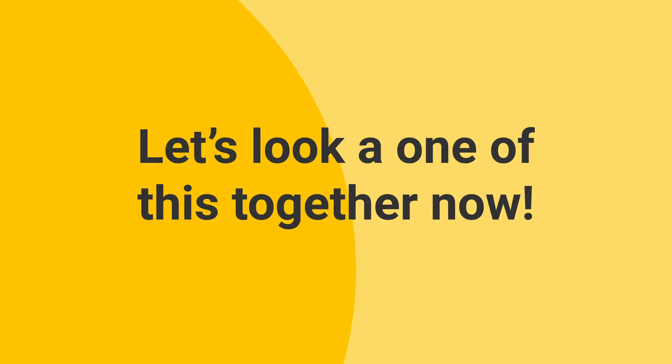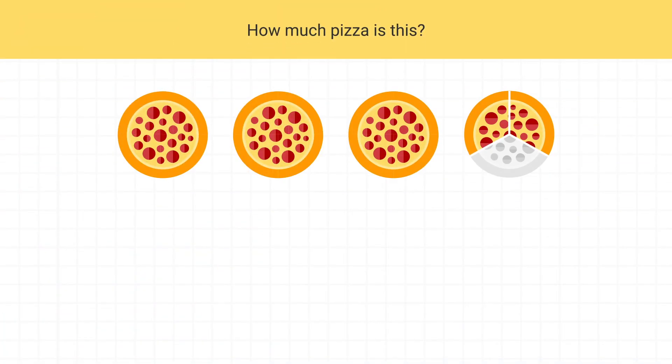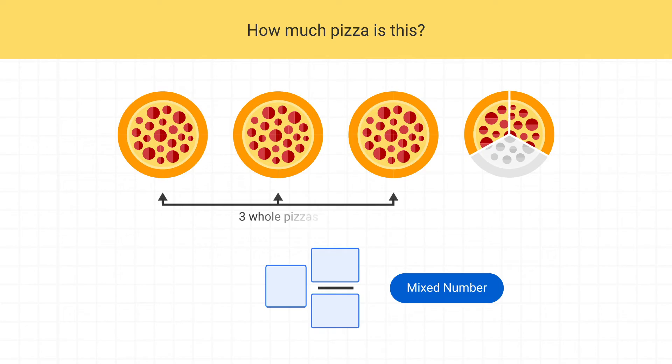Let's look at one of these together now. Let's figure out how much pizza this is. Because we have both whole pizzas and a fraction of a pizza, we'll write this using a mixed number. First, how many whole pizzas do I have? There are three whole pizzas. So I write the whole number three into my mixed number.